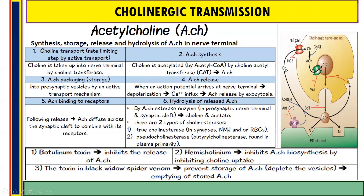Choline is transported into the cytoplasm of the cholinergic nerve ending by means of sodium-dependent choline transferase. Once choline enters the cytoplasm, it gets acetylated by acetylcoenzyme A to form acetylcholine, and this takes place in the presence of choline acetyltransferase. This is the second step — acetylcholine synthesis.